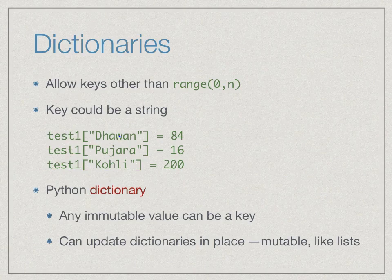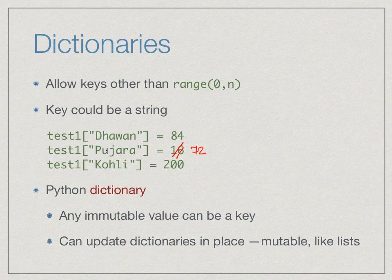The other feature of a dictionary is that, like a list, it is mutable — we can take a value with a key and replace it. For example, we can change Pujara's score from 16 to 72 by assignment. This just takes the current dictionary and replaces the value associated with the key 'pujara'. So dictionaries can be updated in place and are mutable.